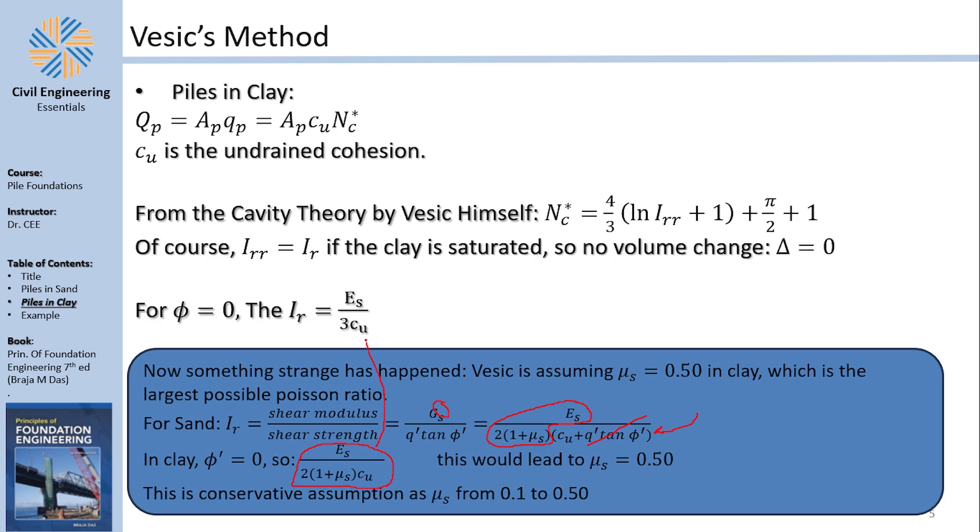But that's not what you see here. What you see here actually has a meaning, because what happens here is that μ was assumed to be the maximum value of half. And this is a conservative assumption, by the way. So if you assume a maximum μ of half, you would get 2 multiplied by 1 + half, which is 3, which is what makes this equation make sense.